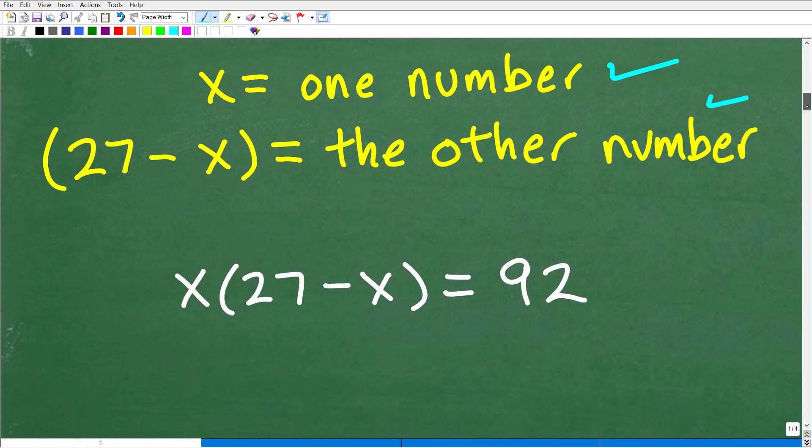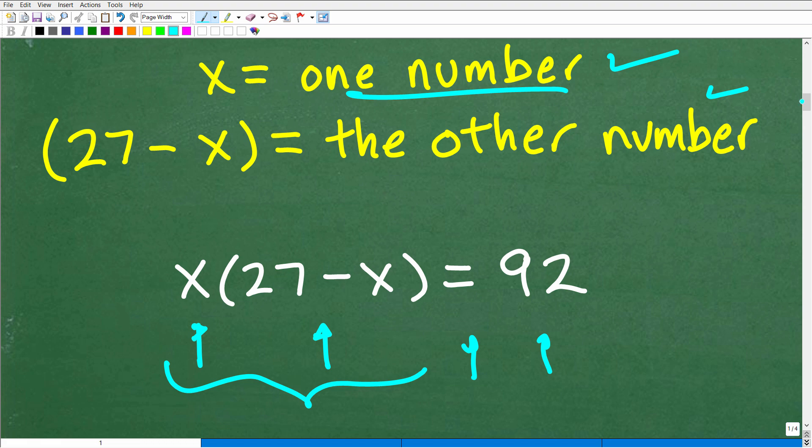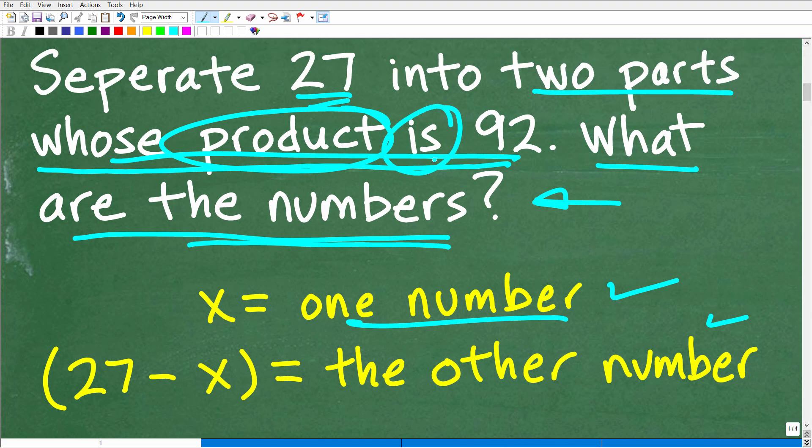So here we end up with this equation here. So this is one number, right? X, and here's the other number, 27 minus X. This is the product of those two numbers, right? And it is 92. So remember the word is, and when you're translating a verbal phrase is always the equal sign. And there you go. There is 92.